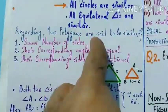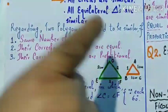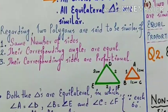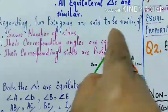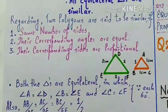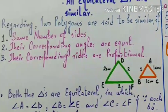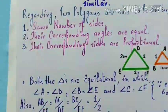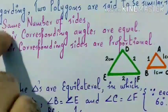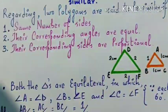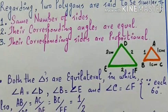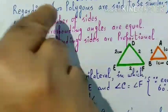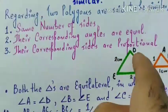Regarding two polygons — two polygons are said to be similar if: number one, same number of sides — अगर एक figure में three sides हो तो अगले में भी three, एक में four तो अगले में भी four होनी चाहिए। Number two: their corresponding angles are equal — corresponding angles equal बनने चाहिए। Number three: their corresponding sides are proportional।